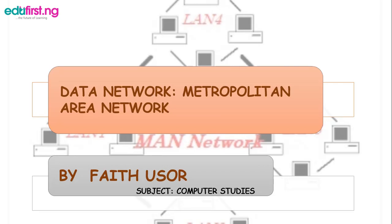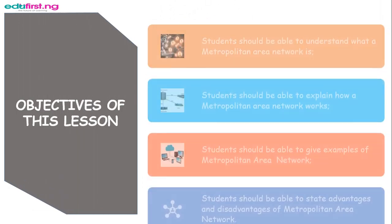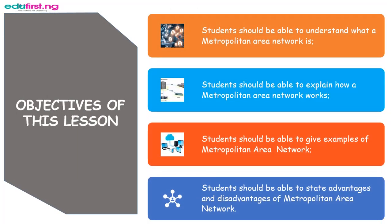Welcome back guys, another session on data networks. For today's class we'll be considering metropolitan area network. My name is Faith. The objectives of today's lesson are that students should be able to understand what a metropolitan area network is, explain how it works, give examples of it, and state its advantages and disadvantages.